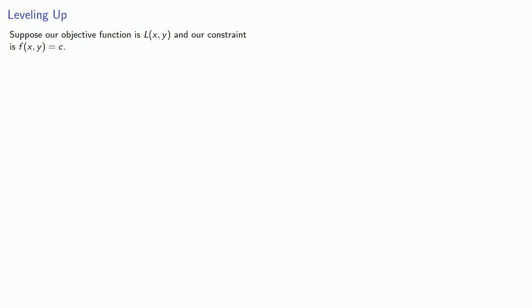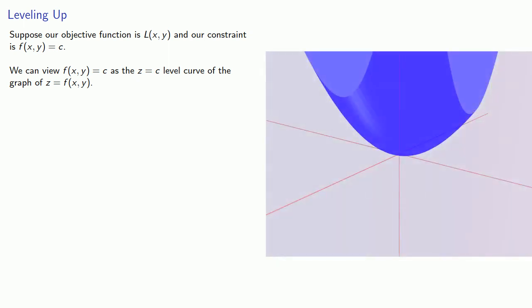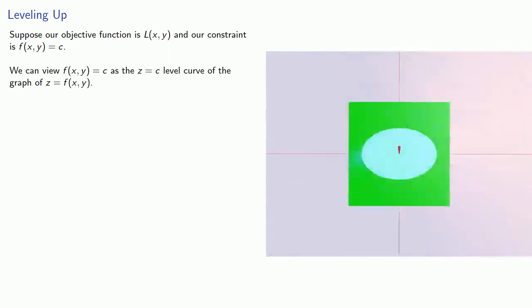We can find this easier way by looking at things from a higher dimensional perspective. Suppose our objective function is L of xy and our constraint is f of xy equals c. We can view f of xy equals c as the z equals c level curve of the graph of the surface z equals f of xy.